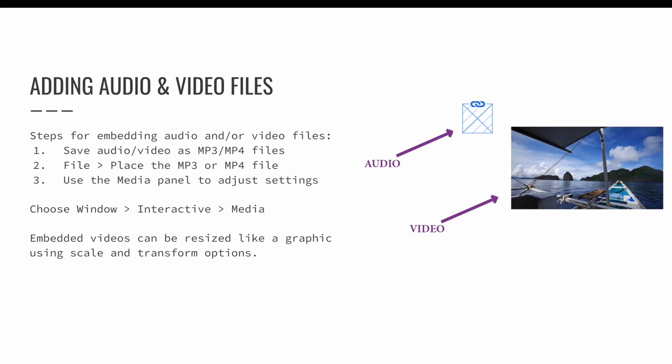The steps needed to embed audio and/or video files into a digital InDesign project are as follows. Step 1: Save your audio file as an MP3 or your video as an MP4. Step 2: File place your MP3 or MP4 file. Step 3: After the audio and/or video is placed into your project, use the media panel to make decisions about it. You can launch the media panel via the Window menu — choose Window, Interactive, and Media.